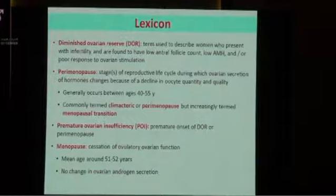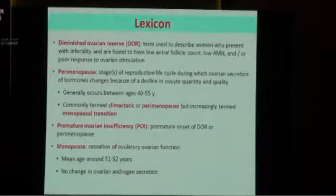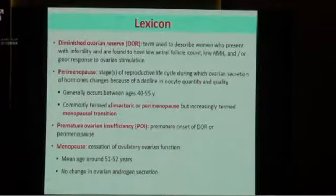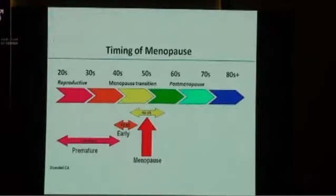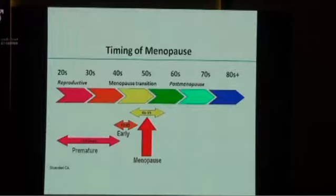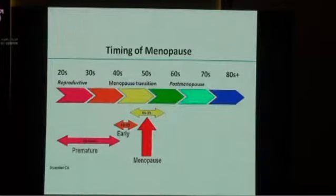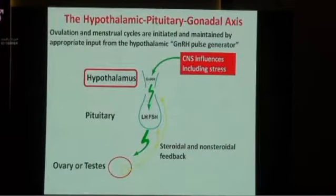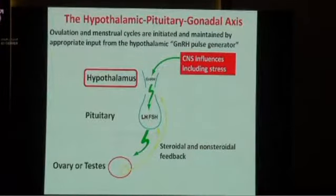Menopause still references the same concept: no longer ovulating any of the follicles that might reside in the ovary. The timing of this is really critical. We expect menopause at a certain age, and when it comes early, it's early menopause, and when it comes very early, we call it premature. We often think of this primarily as just ovarian, but there is a big influence of the CNS.